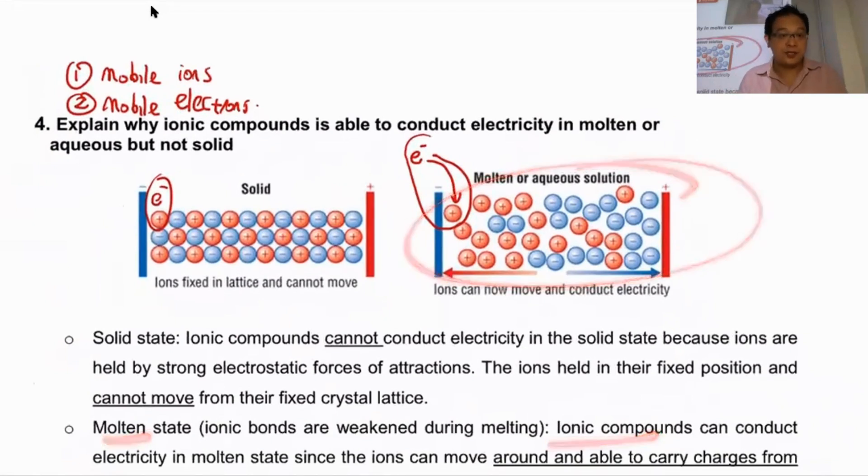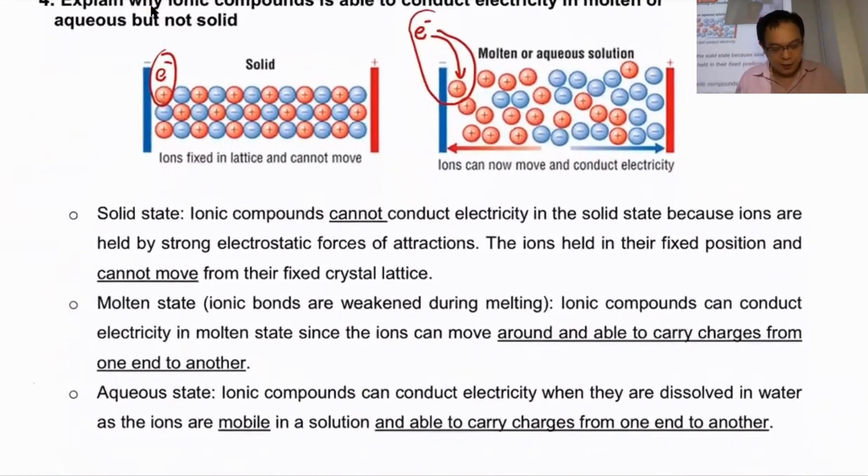In the molten state or aqueous state, you can move around and conduct electricity. Cannot move, cannot conduct electricity. Let's take a look at the next part.